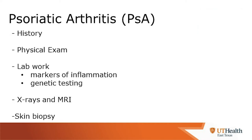We can diagnose patients with psoriatic arthritis based on history and exam, but we can also obtain markers of inflammation and genetic testing. X-rays and MRI can be helpful. And sometimes if we're not sure about the rash, we can ask our dermatology colleagues to perform a skin biopsy to help confirm the diagnosis.